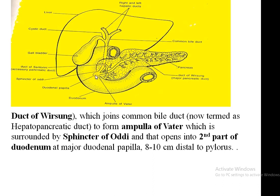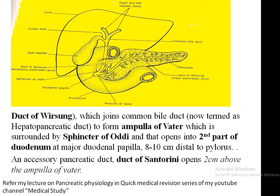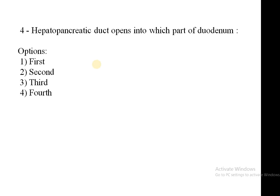There is also a small accessory pancreatic duct known as the duct of Santorini, opening 6 to 8 centimetres distal to the pylorus, 2 centimetres above the major duodenal papilla at the minor duodenal papilla. So the answer is simple: the second part of the duodenum.